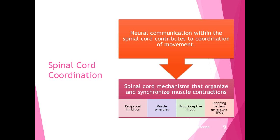The spinal cord has to coordinate all of this. Neural communication within the spinal cord contributes to coordination of movement through several mechanisms: reciprocal inhibition, muscle synergies where muscles work together, proprioceptive input from the somatosensory system to control and synchronize contractions, and spinal cord interneurons called stepping pattern generators that help produce normal walking patterns, which develop as we grow from infancy.